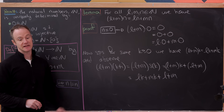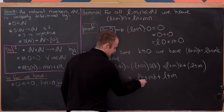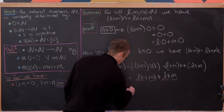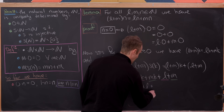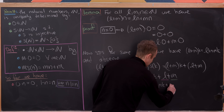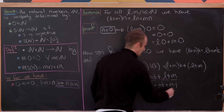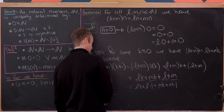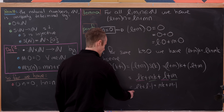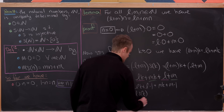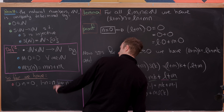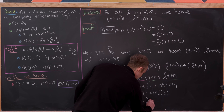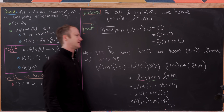Now let's move some stuff together: l·k with l, and m·k with m. That gives us (l·k plus l) plus (m·k plus m). Rewriting l as l times 1 and m as m times 1, we observe that l·k plus l equals l times the successor of k, and m·k plus m equals m times the successor of k by the recursive rule. Since the successor of k is k plus 1, that's l times (k+1) plus m times (k+1) as needed.